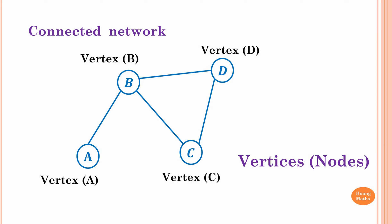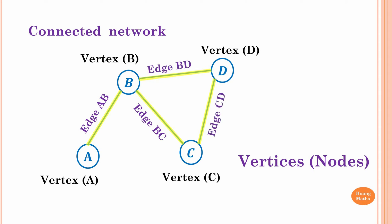Towns A, B, C, and D are called vertices or nodes. So we have vertex A, vertex B, vertex D, and vertex C. The lines connecting A to B, B to D, B to C, and C to D are called edges. The line from A to B is called edge AB.